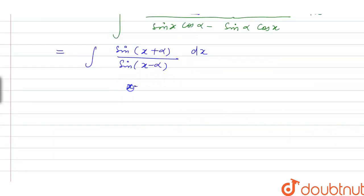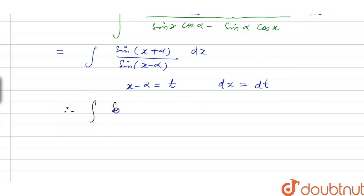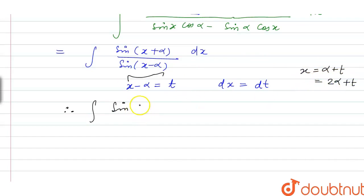Now, we assume x minus α equals t. Differentiating both sides, dx equals dt. We then replace the expression: the integral becomes sin(x + α) over sin(x − α). Since x − α = t, we have x = α + t, so x + α = 2α + t. The expression becomes the integral of sin(2α + t) divided by sin(t) dt.